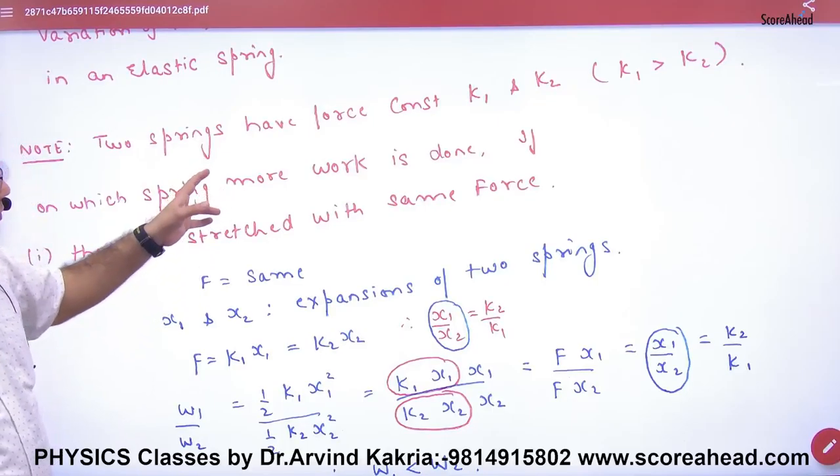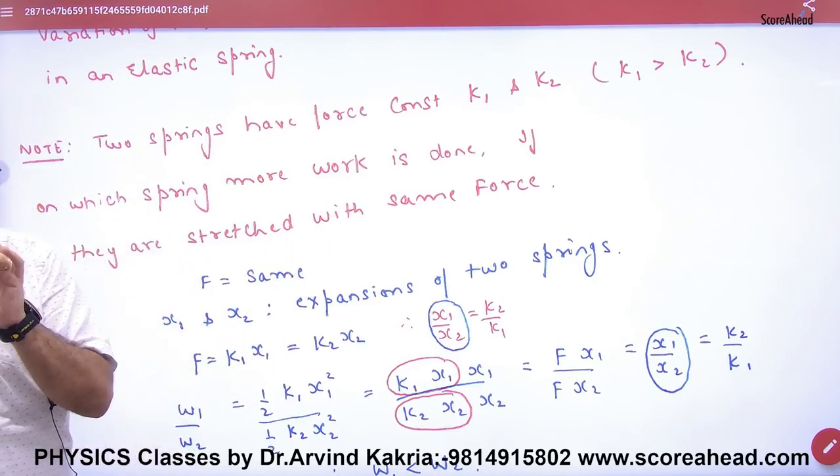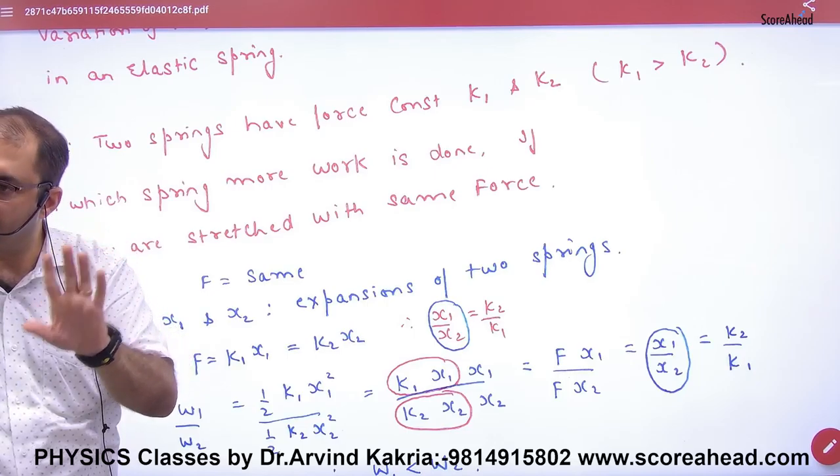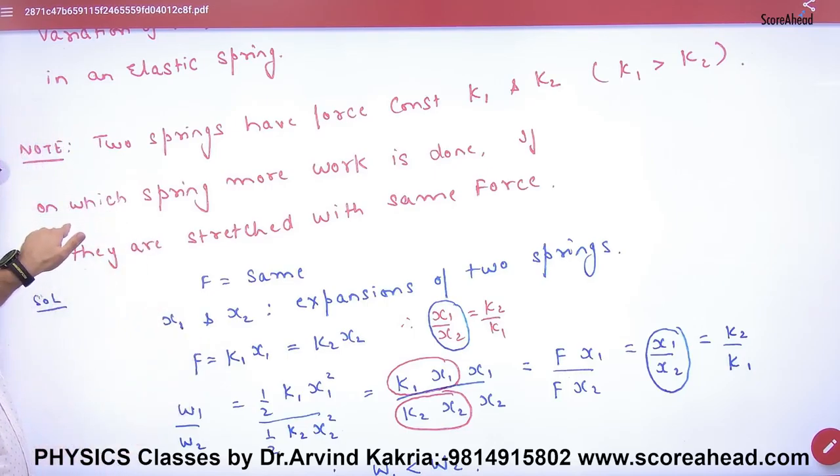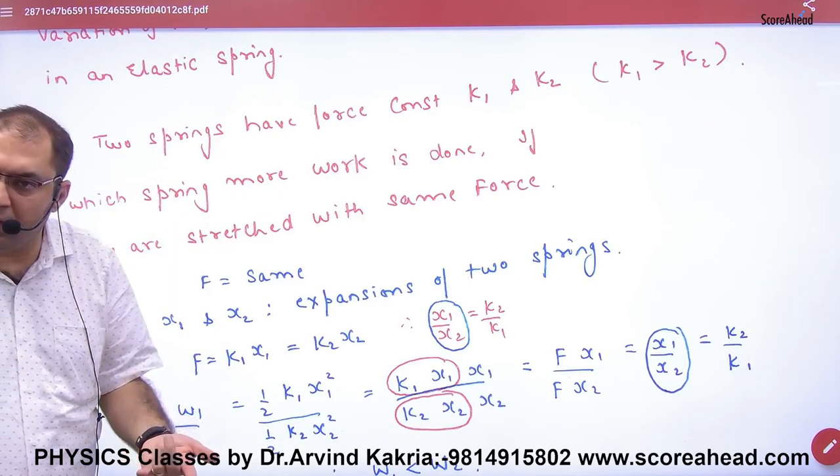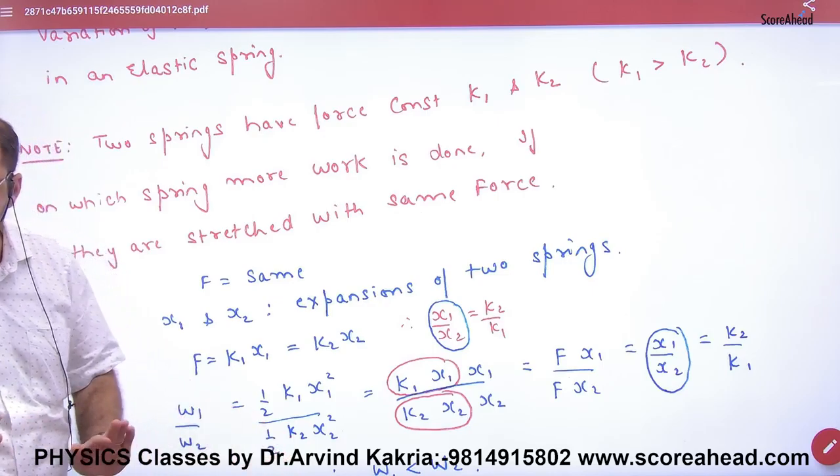The question is: Two springs have force constants K1 and K2, where K1 is greater than K2. K1 is stiff and hard, K2 is soft. On which spring is more work done? You might say more work is done on the hard spring, but no! Let me provide mathematical proof.